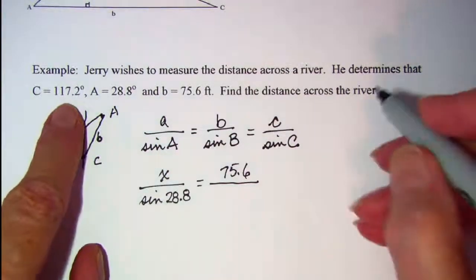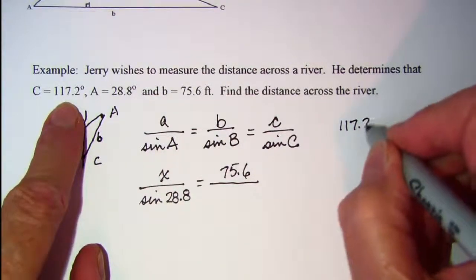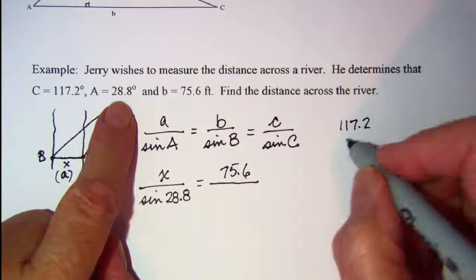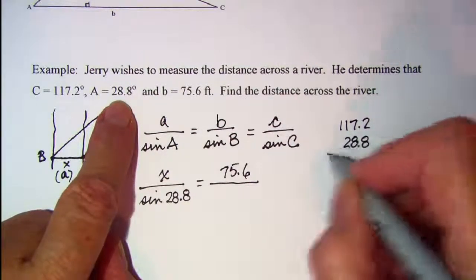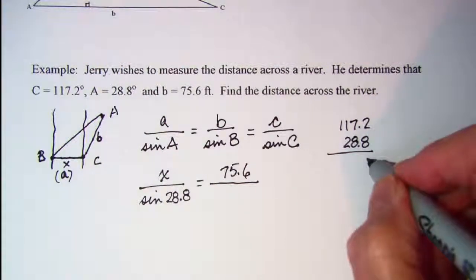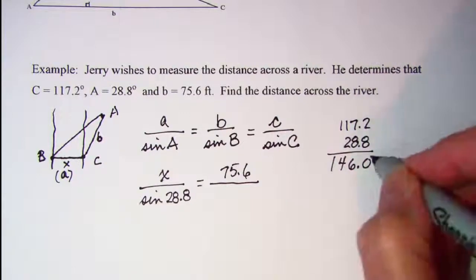Well, we know that the three angles of our triangle add up to 180, so I'm going to add my angle C and my angle A, and that gives us 146 degrees.